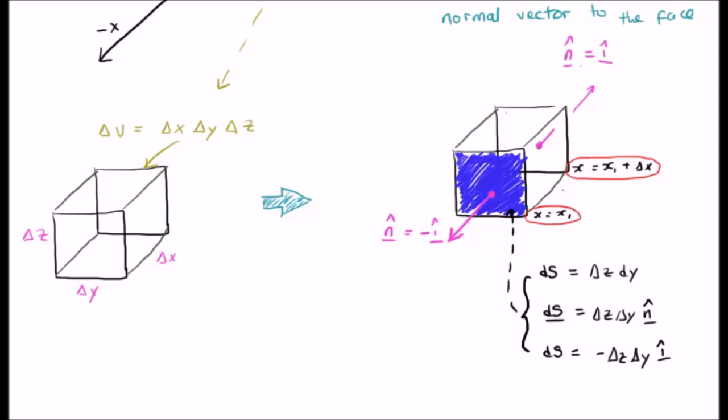Now, the infinitesimal surface area element delta Z delta Y. That's the scalar surface area element. The vector surface area element is delta Y delta Z n hat. And that's either going to be plus or minus, that should be a plus or minus, delta Z delta Y i hat. For reasons we've explained already.